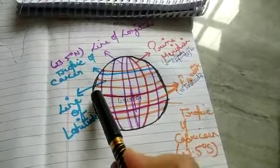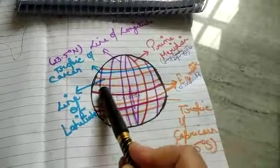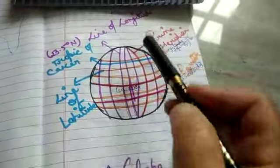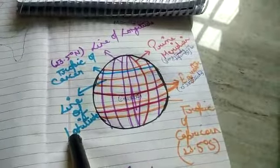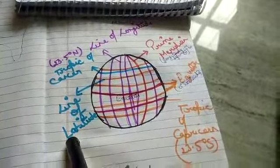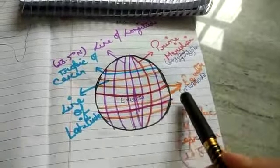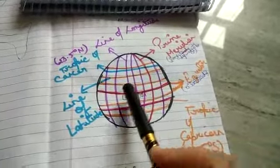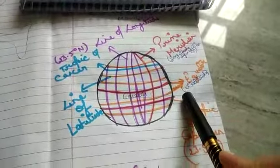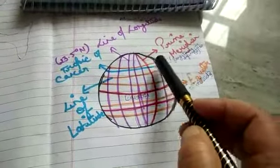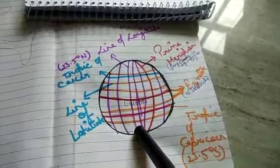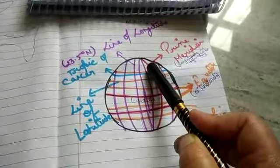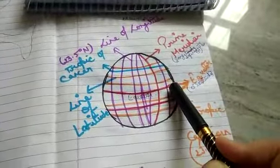Listen carefully. The line that passes through the center of the earth is the equator. Standing lines are known as lines of longitude. Sleeping lines are known as lines of latitude. The equator is at 0 degree latitude, and the prime meridian is at 0 degree longitude.